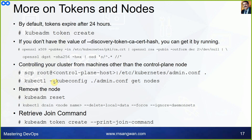For removing a node, use 'kubeadm reset' and 'kubectl drain'. If you lost the join command, you can regenerate it with 'kubeadm token create --print-join-command', which will produce the full join command again.